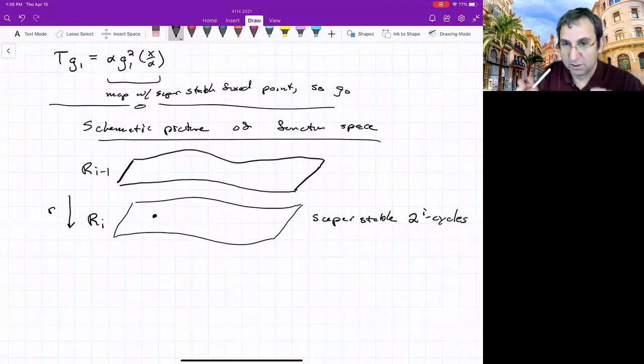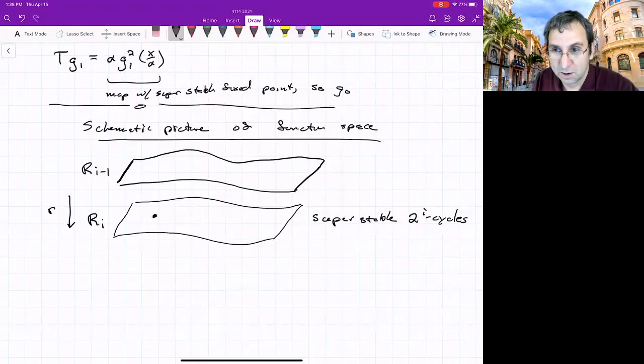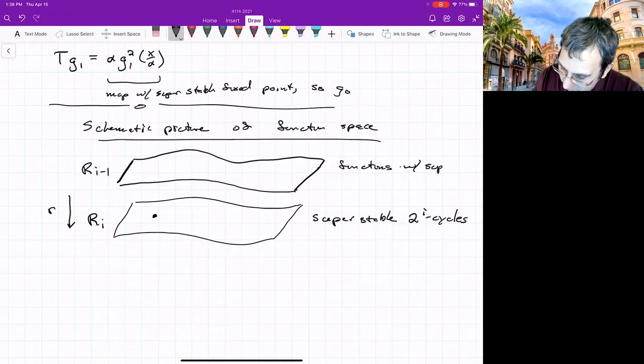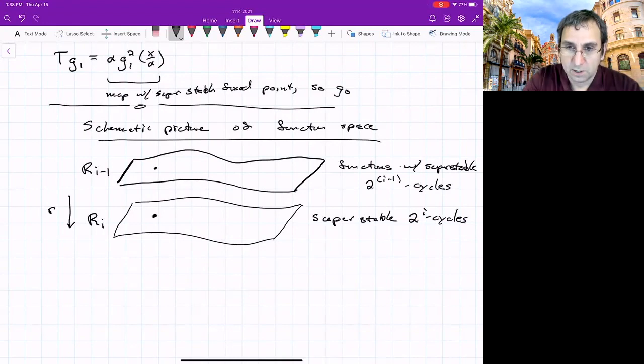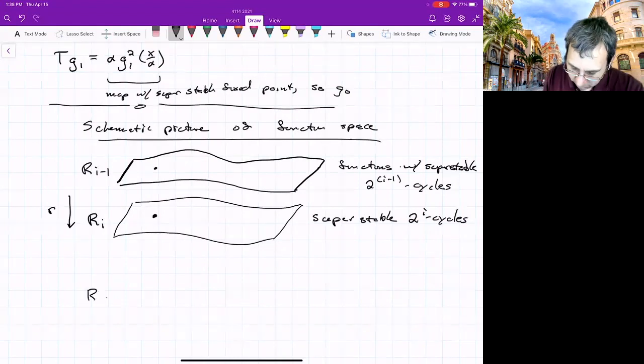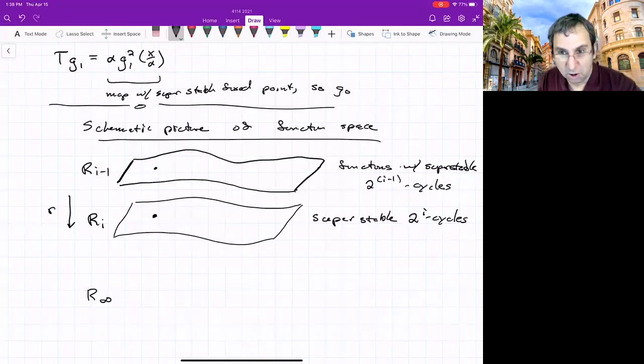So there's going to be another surface, and this will be, in some sense, a parallel surface, r_{i-1}. These are going to be functions with a super stable 2 to the i minus 1 cycle. And here's the logistic map. And we could kind of keep on doing this, going all the way down to where things accumulate, r_infinity.